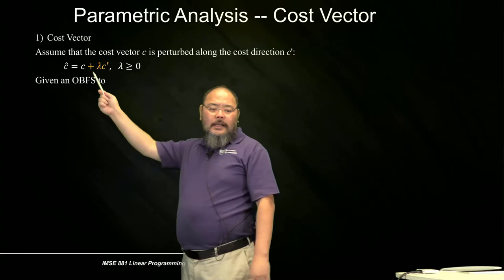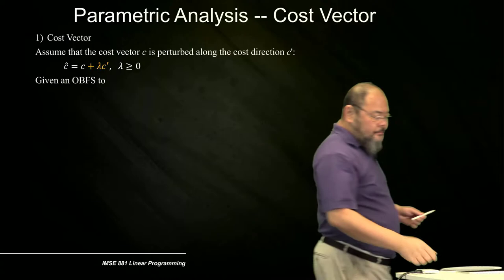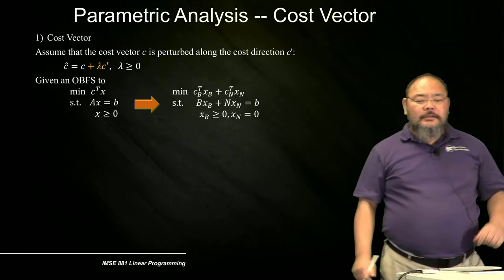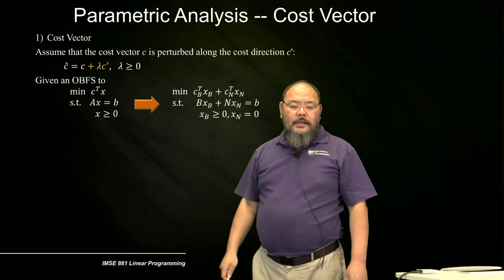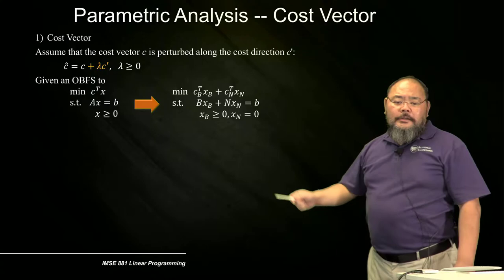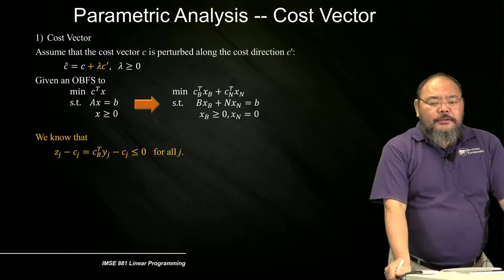The optimal basic feasible solution for the problem — minimize C-transpose times X, subject to AX equals B, X non-negative — can be separated into basic and non-basic variables. At the optimal, all ZJ minus CJ should be non-positive, less than or equal to zero for all J, including both basic and non-basic columns.